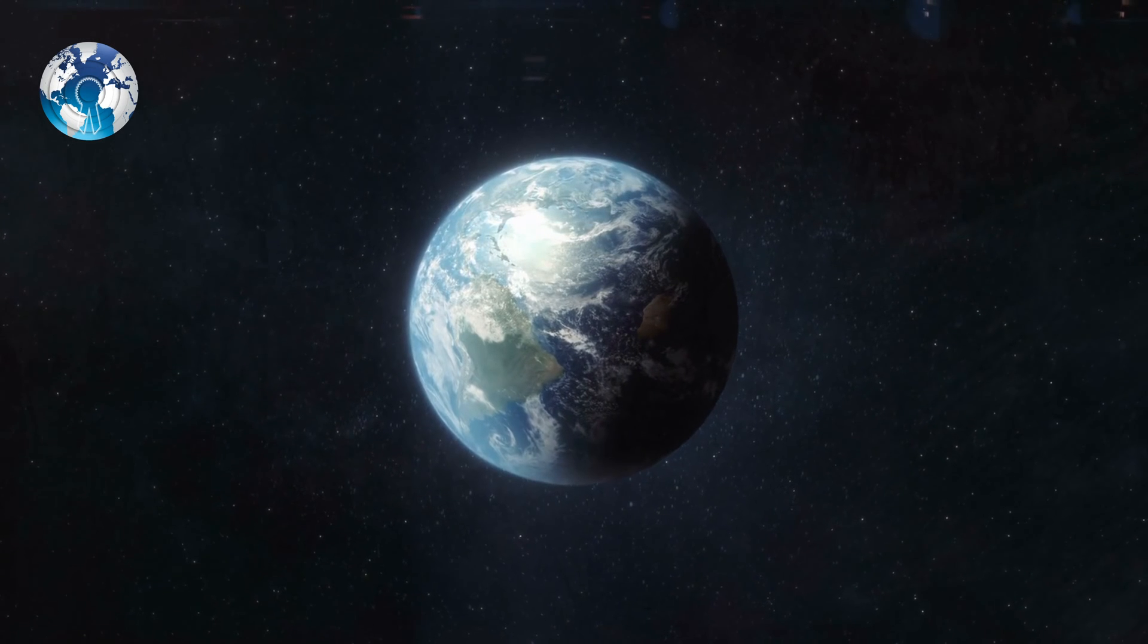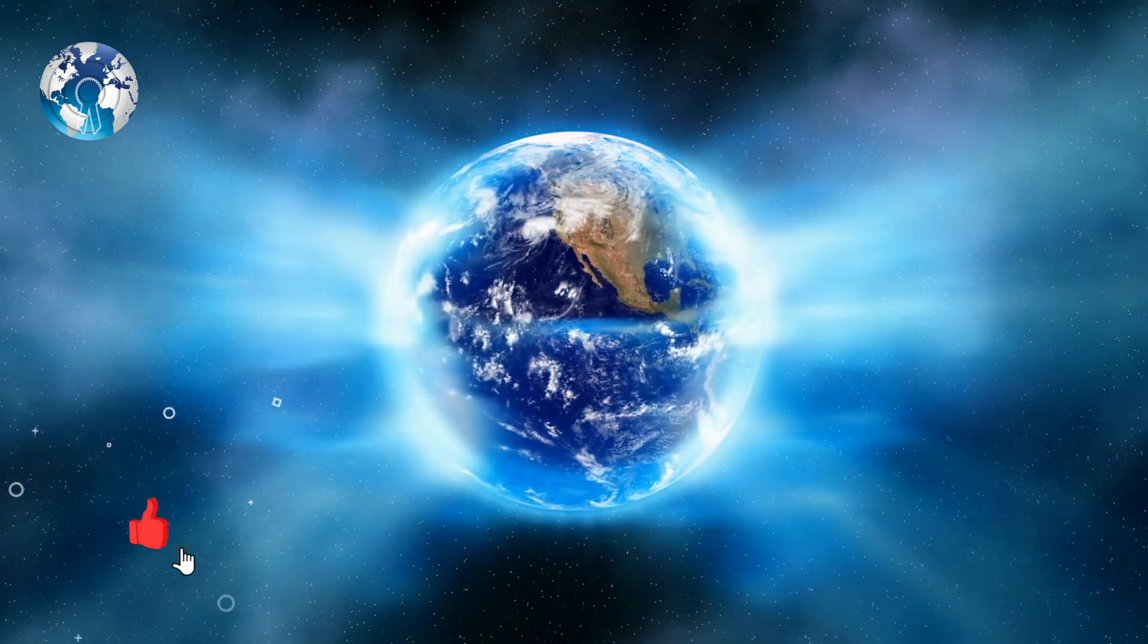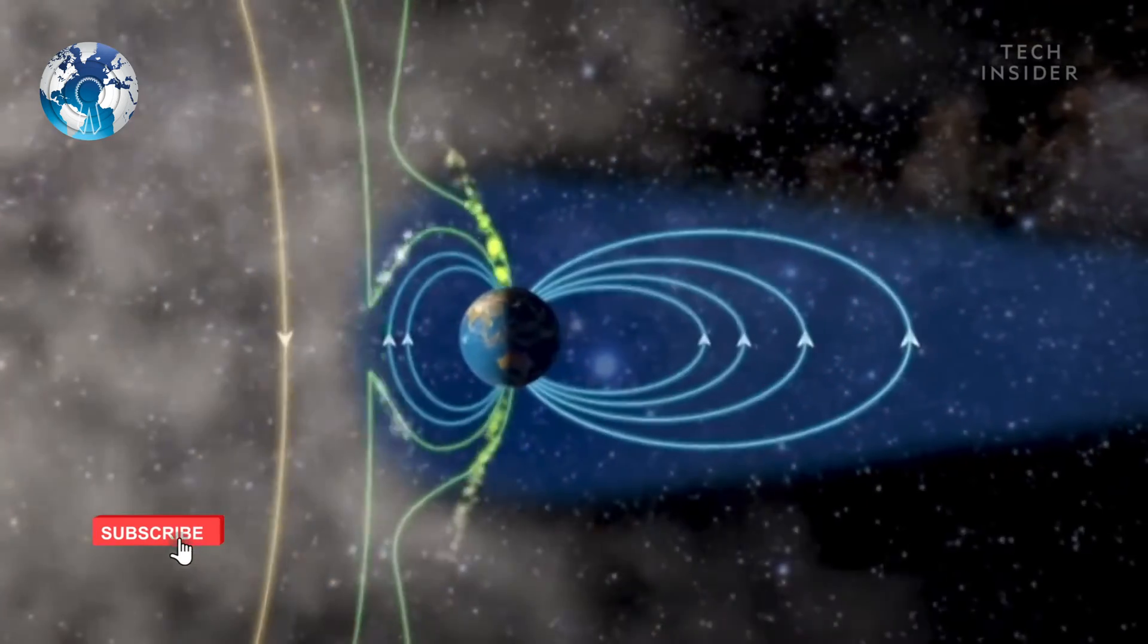A new study by the University of Liverpool supports the theory that Earth's magnetic field is cyclical and weakens every 200 million years.